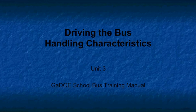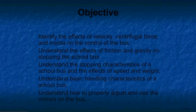This is Unit 3 of the Regular Ed Units for the Georgia Department of Education School Bus Training. In this unit, we're going to talk about driving the bus and basic bus handling characteristics. Our objectives are to identify the effects of velocity, centrifugal force, and inertia on the control of the bus, to understand the effects of friction and gravity on stopping the bus, understanding the stopping characteristics of a school bus and the effects of speed and weight, understand basic handling characteristics of a school bus, and understand how to properly adjust and use the mirrors on your bus.